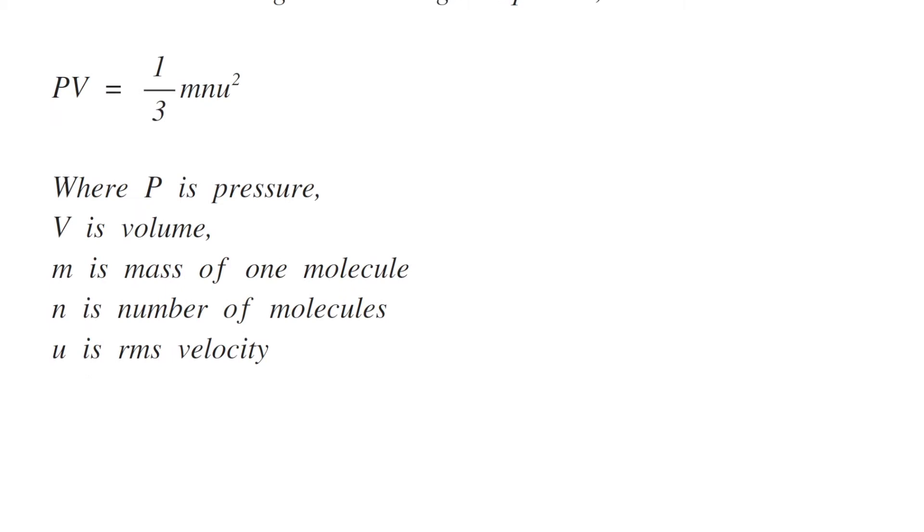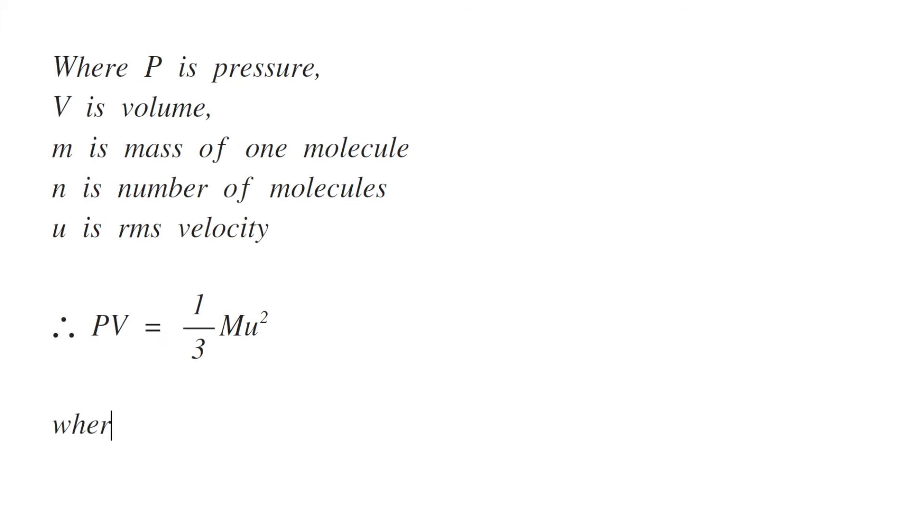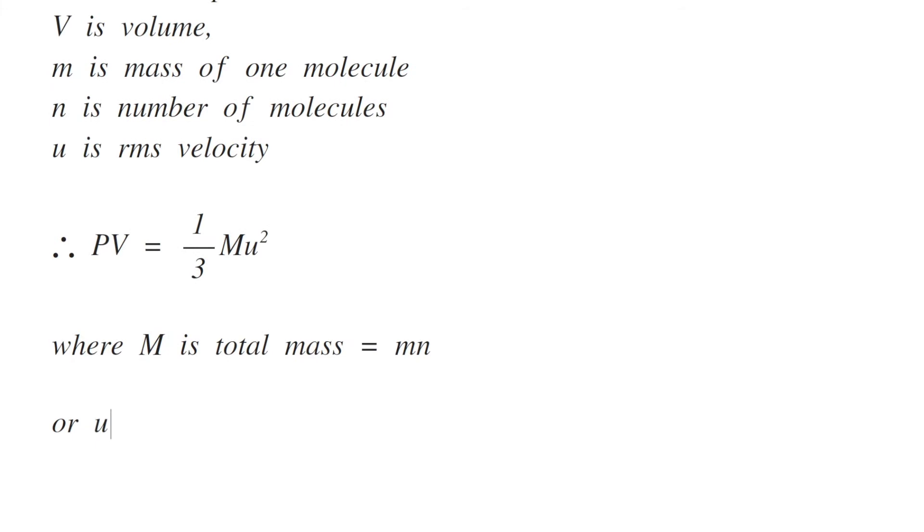So PV equals 1/3 Mu², where capital M equals small m times n, which is the total mass of the gas.